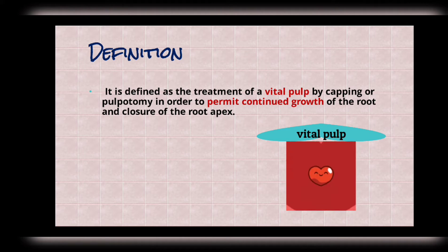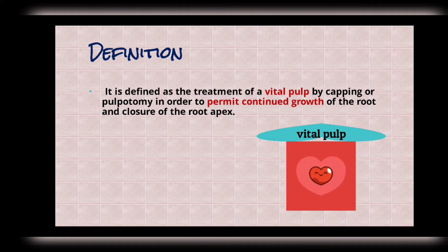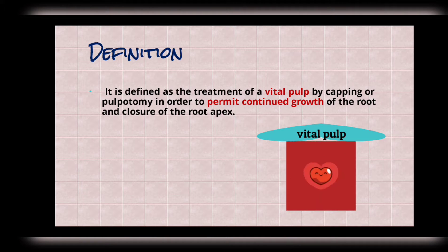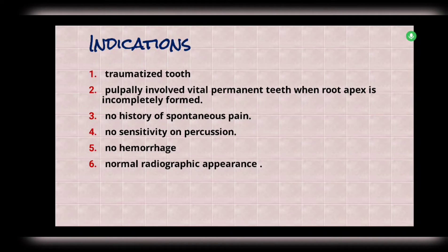By definition, apexogenesis is the treatment of a vital pulp by capping or pulpotomy in order to permit continued growth of the root and closure of the root apex. It is the formation of root apex in vital young permanent teeth with appropriate vital pulp therapy, which may include direct pulp capping, indirect pulp capping, and pulpotomy. This is a natural physiological process, and the main goal is to keep the pulp alive by maintaining the integrity of the radicular pulp to allow continued root apex growth.